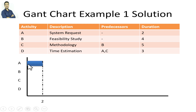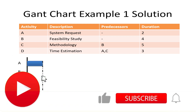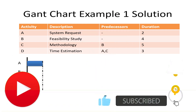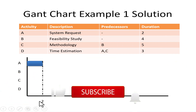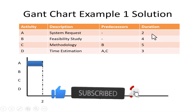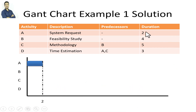To draw activity A, I draw a rectangle starting from the Y axis. After finishing the rectangle, I write the duration that it takes — I get this duration from the table above. Activity A has a duration of 2.